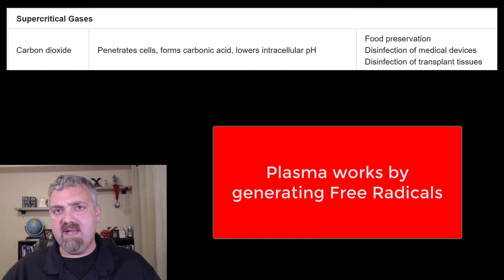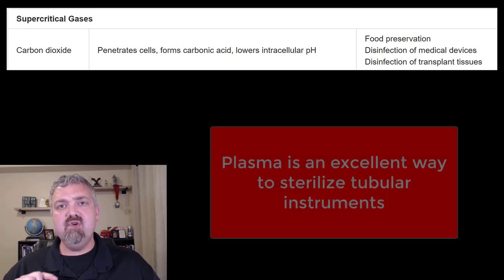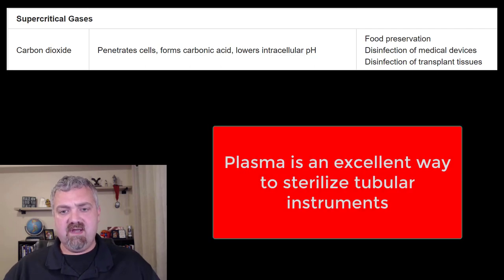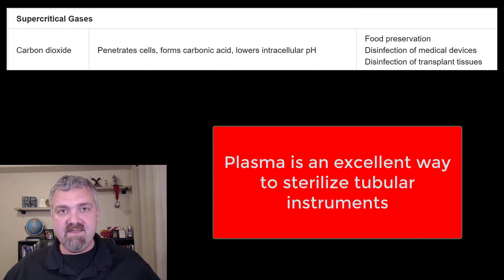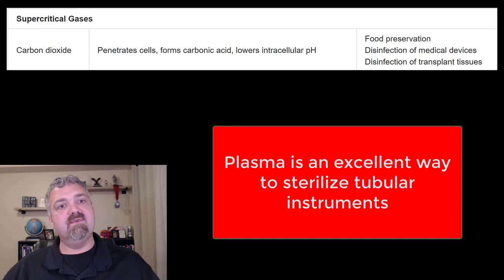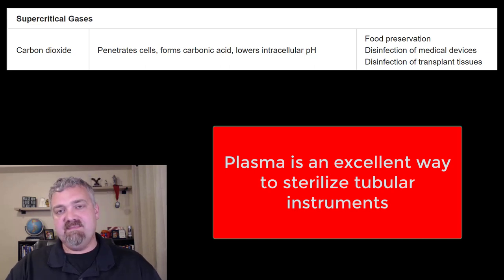The key thing to note about plasma is that hydrogen peroxide and peracetic acid work in other situations too, but for tubular instruments — where you have a long hollow tube and you have to make sure the inside is sterile — plasma is a great way to get at those things. So that is your supercritical fluids and plasma.